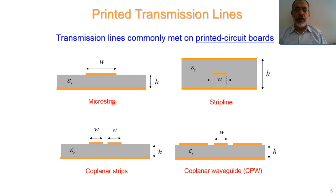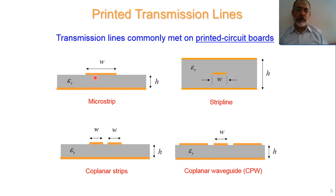This microstrip line does not support a pure Transverse Electromagnetic wave, but rather a quasi-TEM wave, meaning it is very close to a TEM wave. Such a microstrip transmission line can also operate from zero frequency, so it has no cutoff frequency — it can work from DC to any frequency.